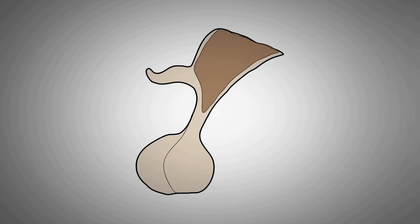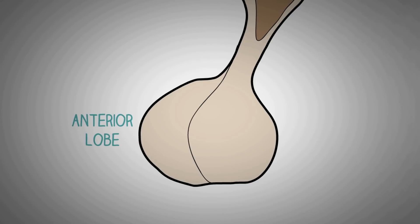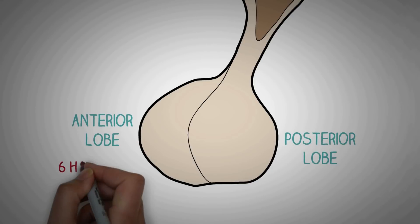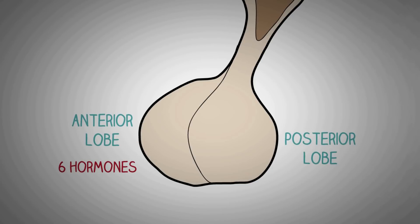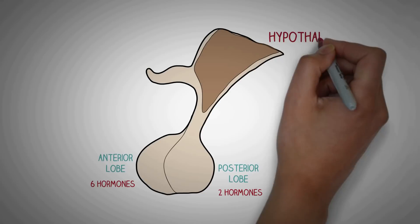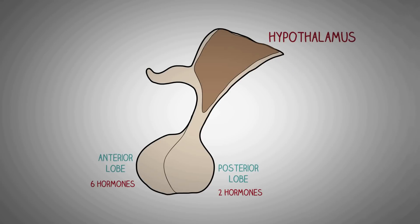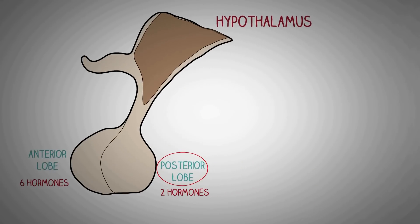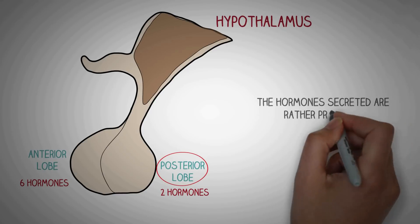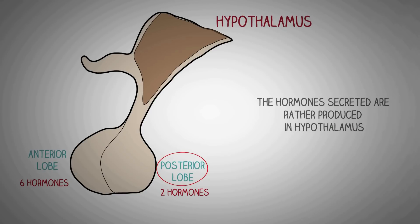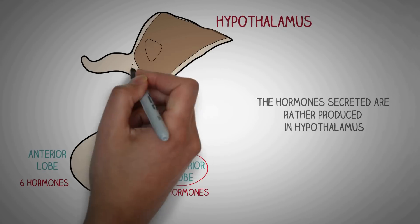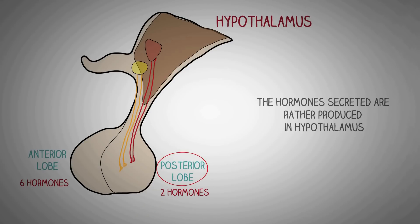The pituitary gland is composed of an anterior lobe and a posterior lobe, and together they secrete about eight hormones which either inhibit or stimulate secretions from other endocrine glands. The hypothalamus directly or indirectly controls the secretions from the pituitary gland. The posterior pituitary does not secrete hormones of its own — these hormones are actually synthesized in the hypothalamus.